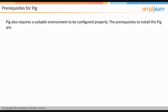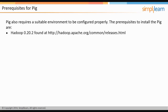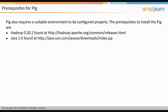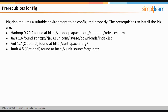Similar to Hive, Pig also requires a suitable environment to be configured properly. The prerequisites for installing Pig are: Hadoop 0.20.2, Java 1.6, Ant 1.7 (optional), and JUnit 4.5 (optional). The links at which these can be found are shown on the screen.